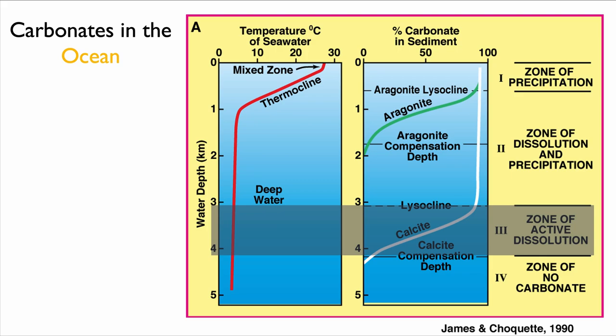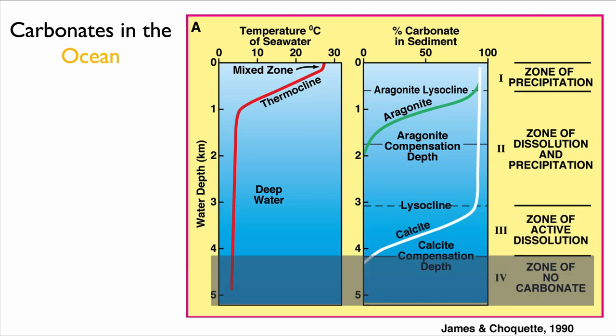Zone 3 is a zone of active dissolution. Finally, below the calcite compensation depth, we have zero precipitation of calcite — essentially a zone of no carbonates. You can see that water temperature and position in the water column play a great role in controlling diagenesis, at least for carbonate cements. Carbonate cements can occur in carbonate successions but also in sandstone or clastic successions, so don't think of carbonates as just for carbonate systems.